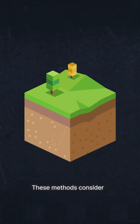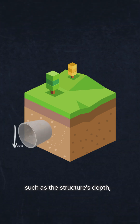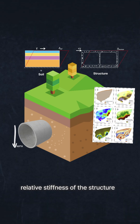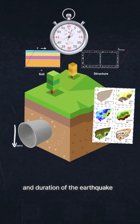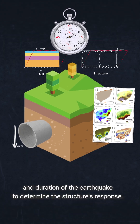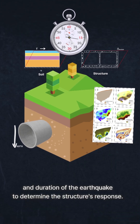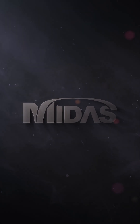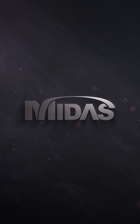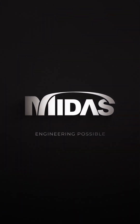These methods consider various factors such as the structure's depth, soil type, relative stiffness of the structure and soil, and duration of the earthquake to determine the structure's response. For detailed information about each method, you can click on the link provided in the comment section.